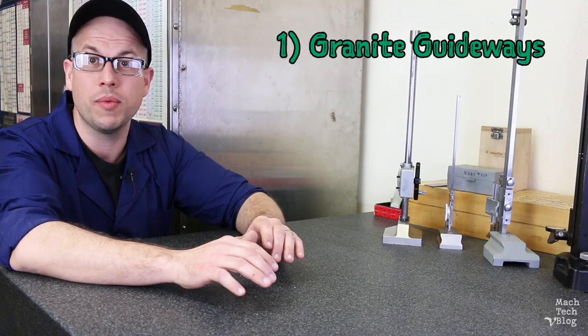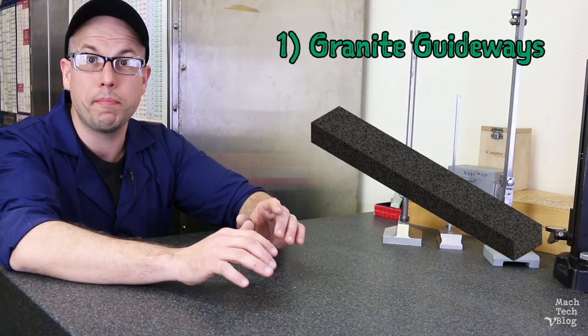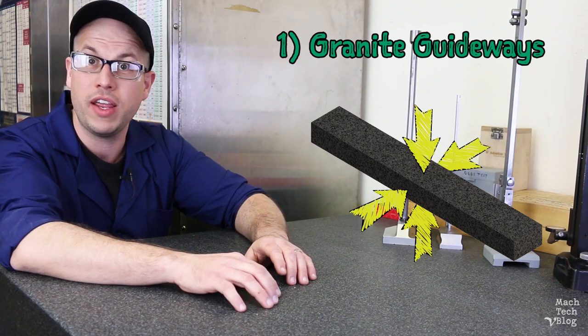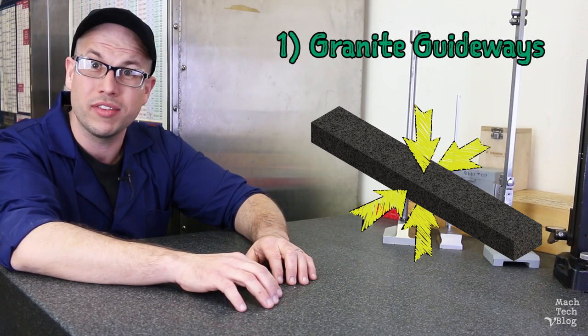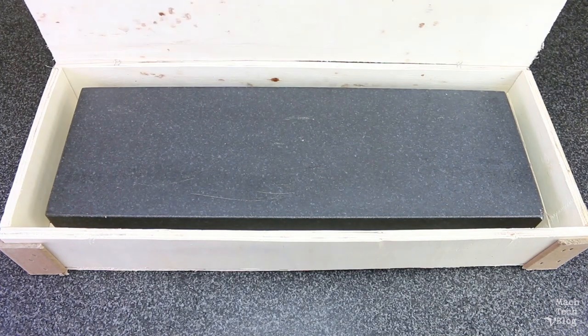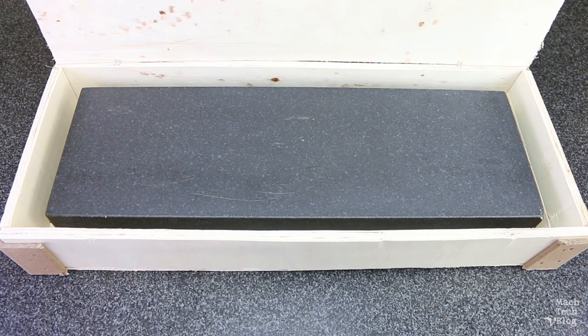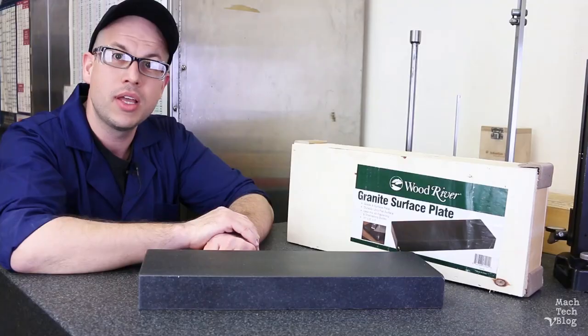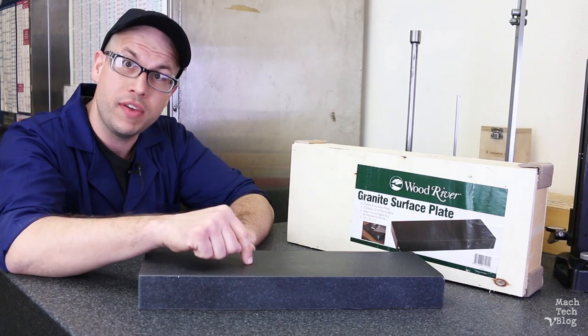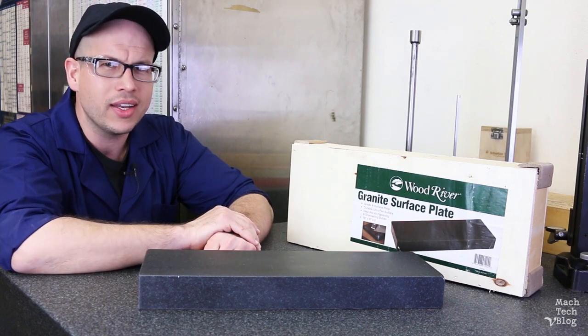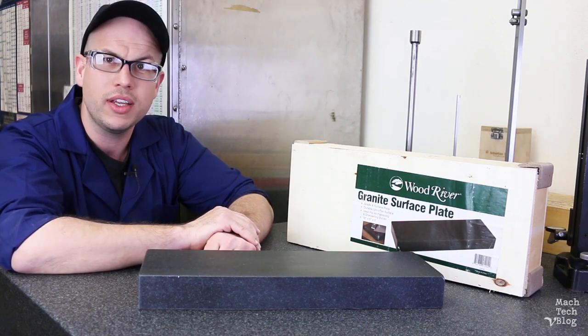First, there are the granite guideways. You could use granite parallels with four finished faces, but they're pretty expensive. An alternative, at least for the longitudinal guideways, is to buy one of these six-inch wide by 18-inch long by two-inch thick granite surface plates from Wood River. Only one face is finished, but it turns out that grinding and lapping granite is surprisingly straightforward, so you could finish the other three faces yourself.